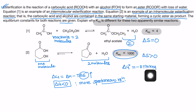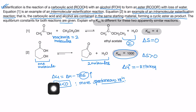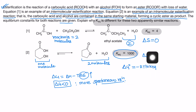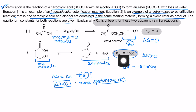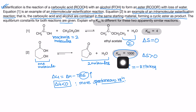Greater the negative value of ΔG, the more is the value of K_equilibrium. Because entropy change ΔS is positive, ΔG° becomes more and more negative, and due to that K_equilibrium increases. That's why K_equilibrium is 4 for the intermolecular reaction where entropy change is almost zero, and much higher for the intramolecular reaction.